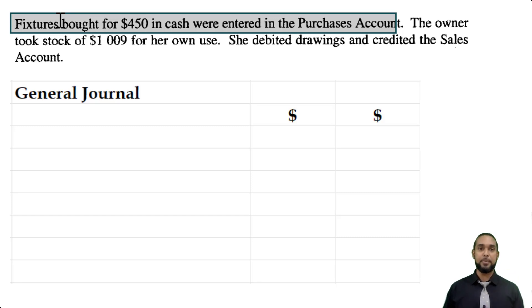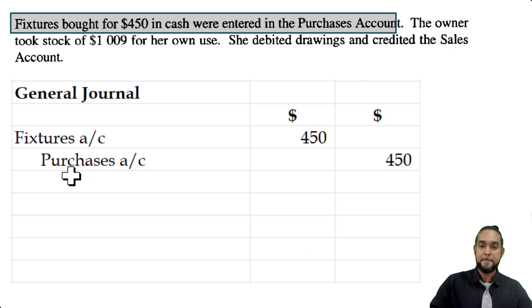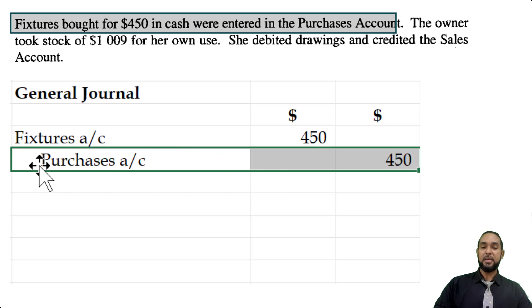So how do we fix that? Well, if we were supposed to debit fixtures, but we didn't, then to fix that, we have to debit fixtures. So let's start there. Now, of course, we use the general journal to correct errors. With the general journal, debit entries come first. And of course, we'll credit purchases. Why? Because we debited it when we weren't supposed to. To remove our debit, you have to go on the opposite side, which is the credit side, and put the amount you want to remove, which in this case is $450.